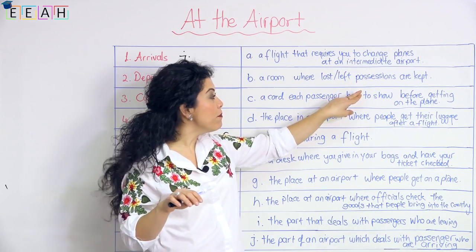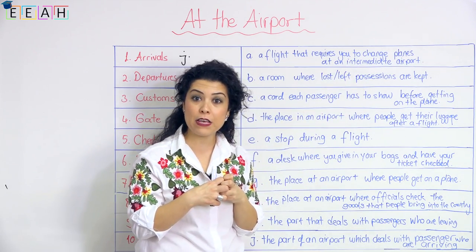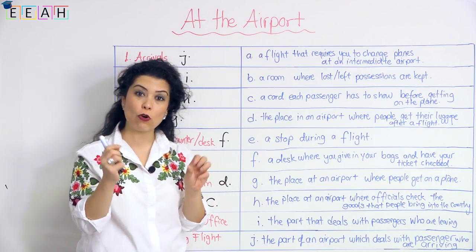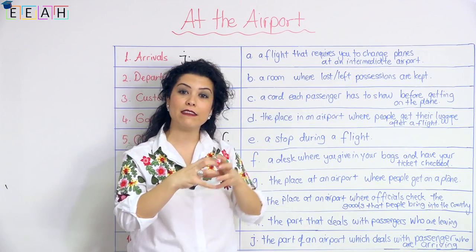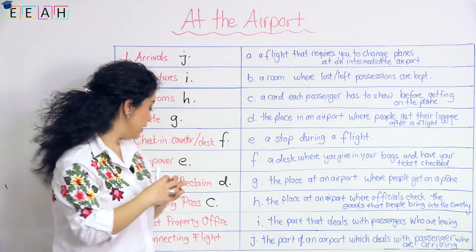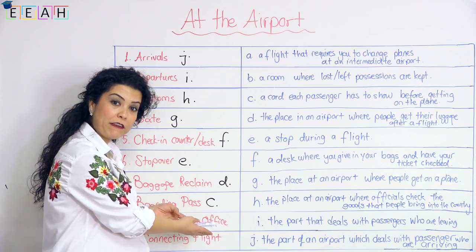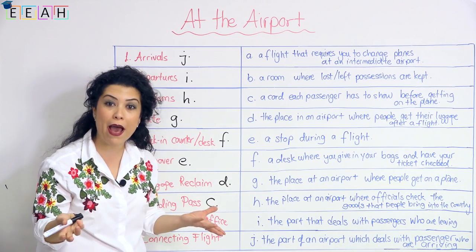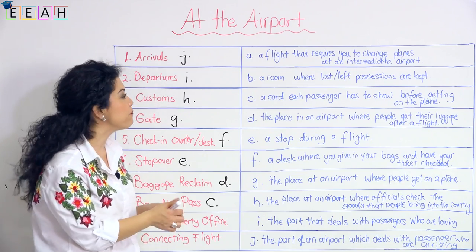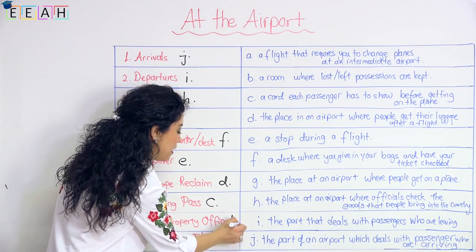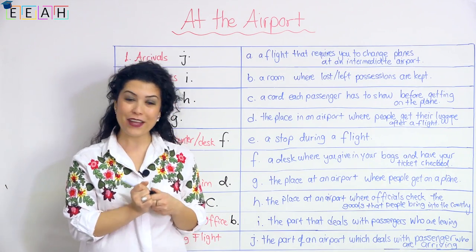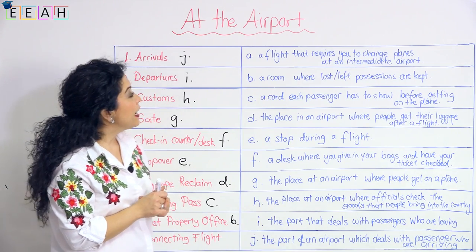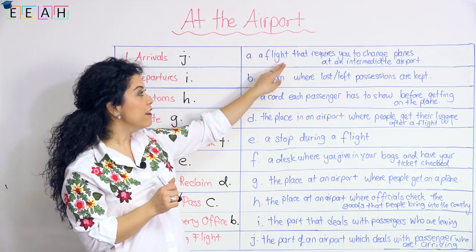Next: 'lost property office.' It's a room where lost and left possessions — things that belong to people — are kept. People forget them in public areas, so all these things are collected and put into the lost property office. You can go and find your lost bag or luggage there. That matches with B.